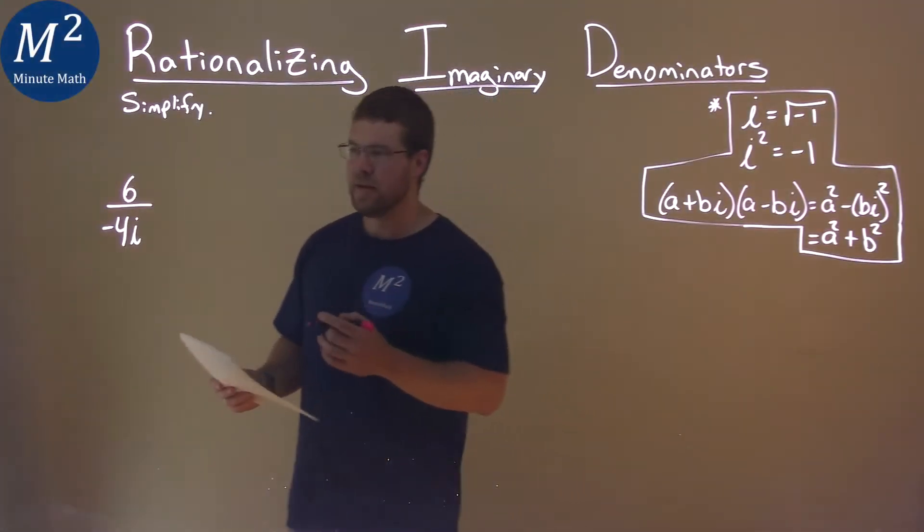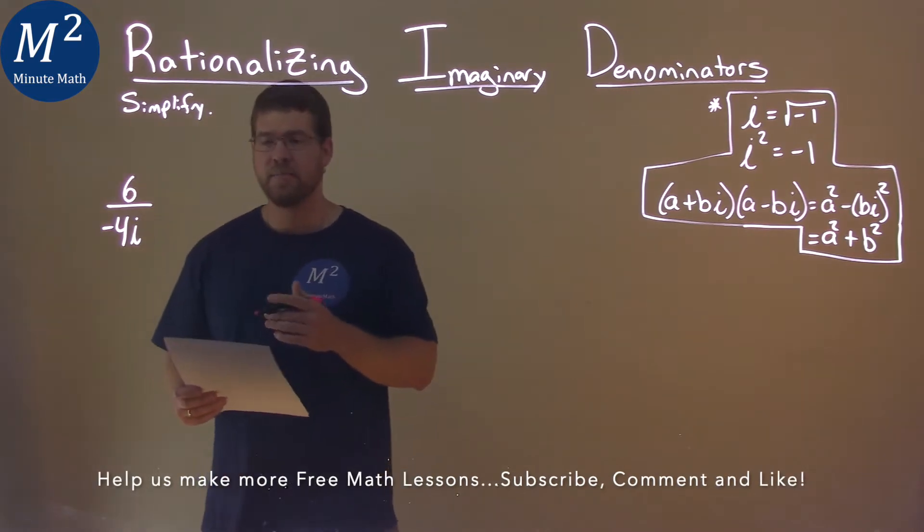We're given this problem right here: 6 divided by negative 4i, and we've got to simplify.